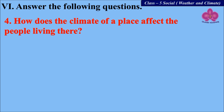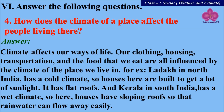How does the climate of a place affect the people living there? Climate affects our ways of life — our clothing, housing, transportation, and the food we eat are all influenced by the climate. For example, Ladakh in North India has a cold climate, so houses are built to get a lot of sunlight and have flat roofs. Kerala in South India has a wet climate, so houses have sloping roofs so that rainwater can flow away easily.